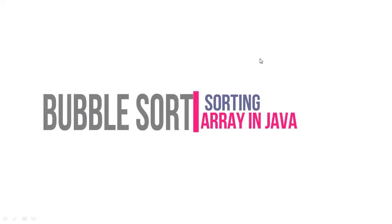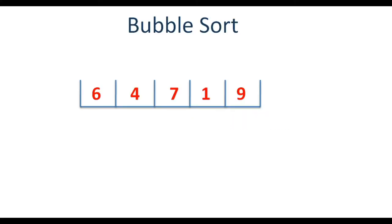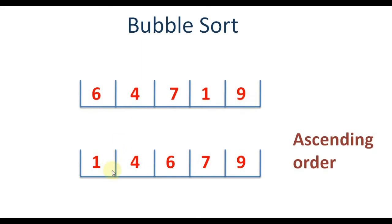Hi guys, welcome to another episode of CodeBoard. In this video we are going to see how to sort an array using a simple technique called bubble sort. For those who don't know, first let me explain what sorting is. Basically, sorting is reordering an array in ascending or descending order. Ascending order means the smallest element will come first and go up to the greatest element. For example, if we have an array with elements 6, 4, 7, 1, and 9, the output should be 1, 4, 6, 7, 9. In this way we are going to sort the array in Java.